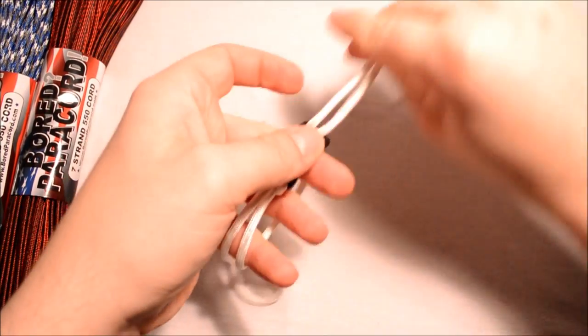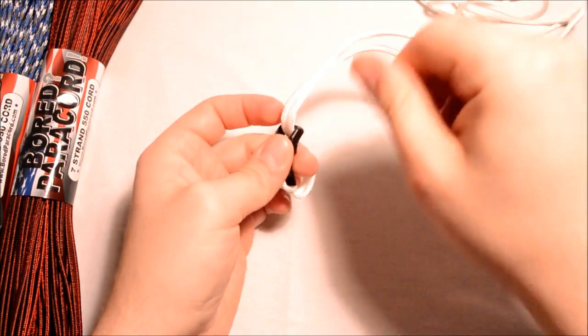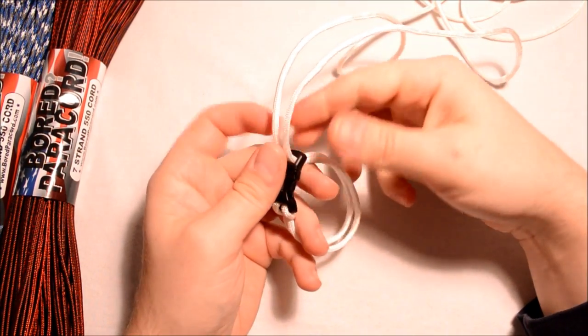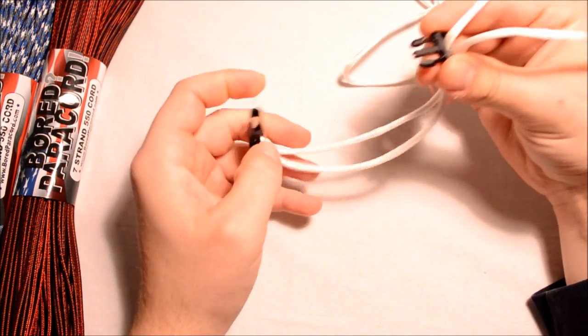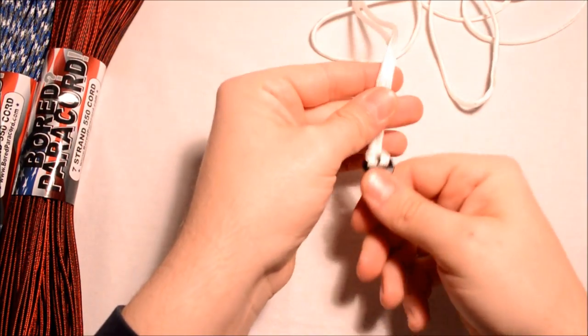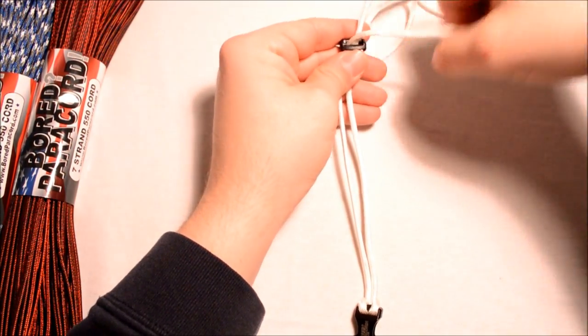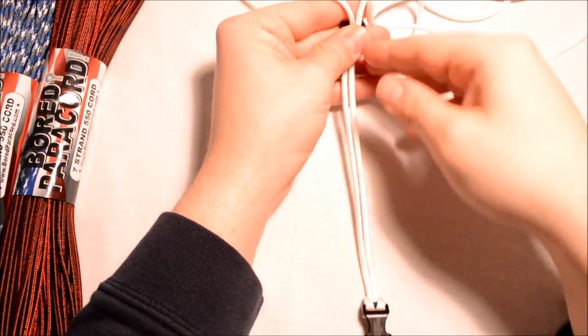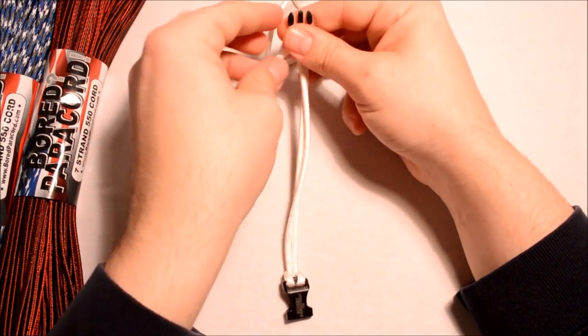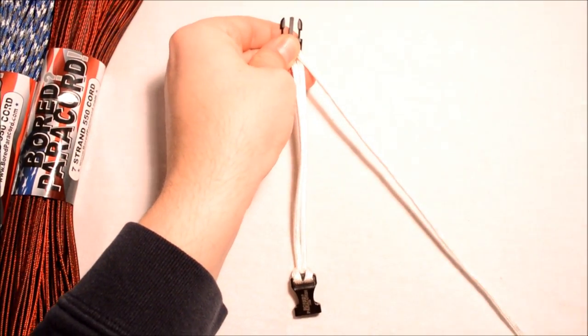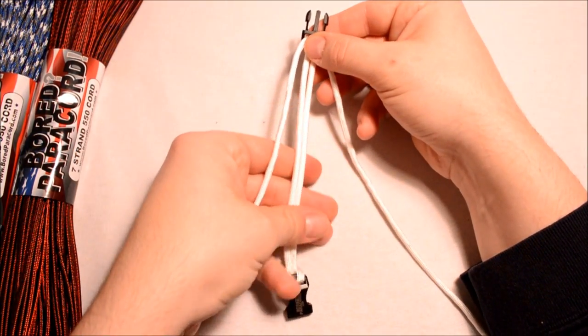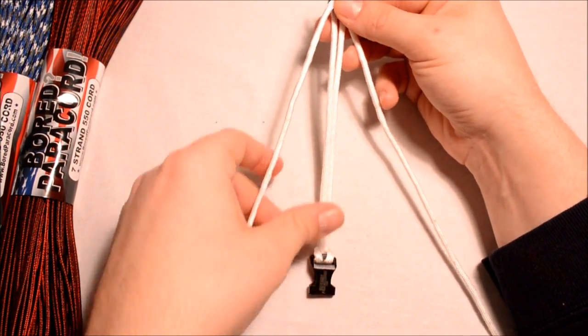I already flattened the ends of the paracord, heat them up with a lighter, use a pair of pliers, and you can squish those down. Gives you a real nice flat edge to get through the buckle a lot easier. So I'm going to go about this long I think. You want to get to this point where you've got one white cord coming off to the right and one white cord coming off to the left.